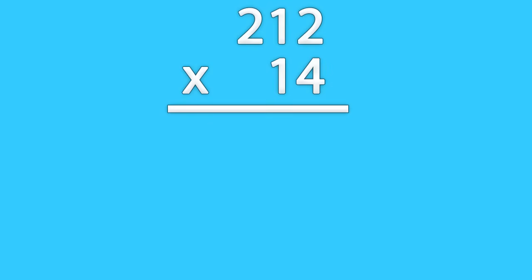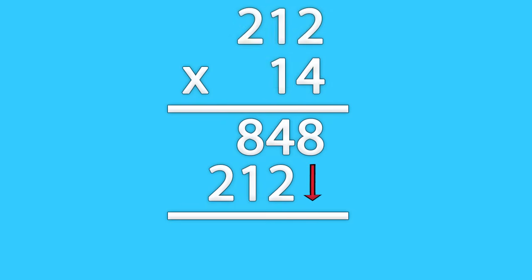212 times 14. Start with the farthest right number. Leave a space. Multiply the left number. Then add. That's right. 2,968.